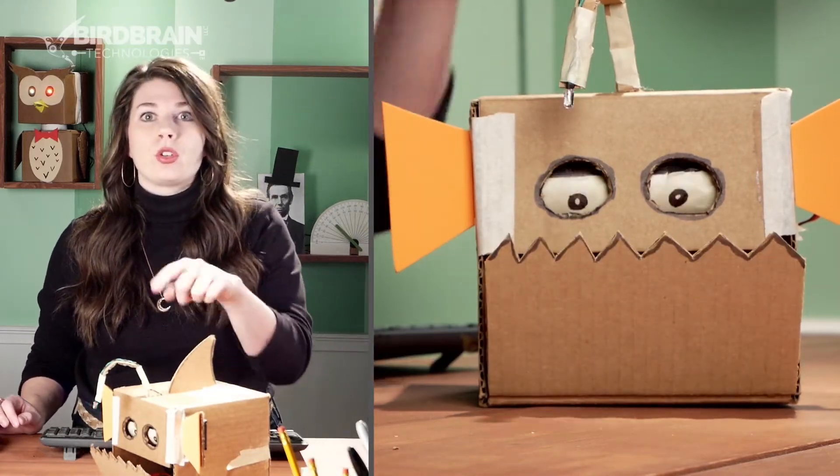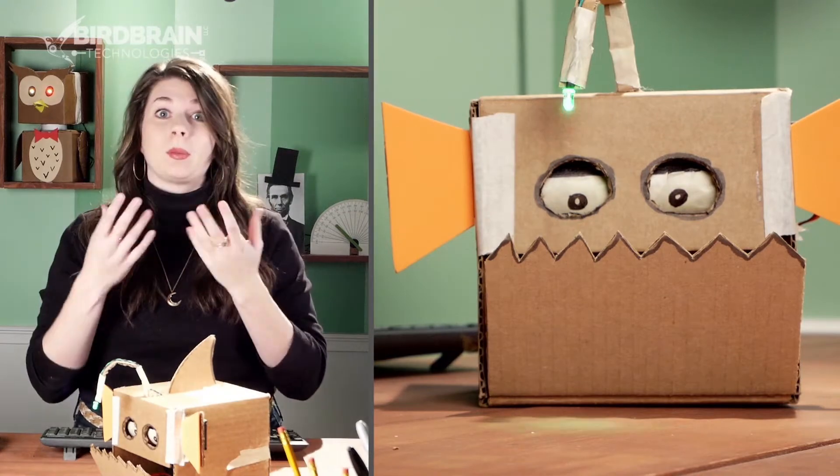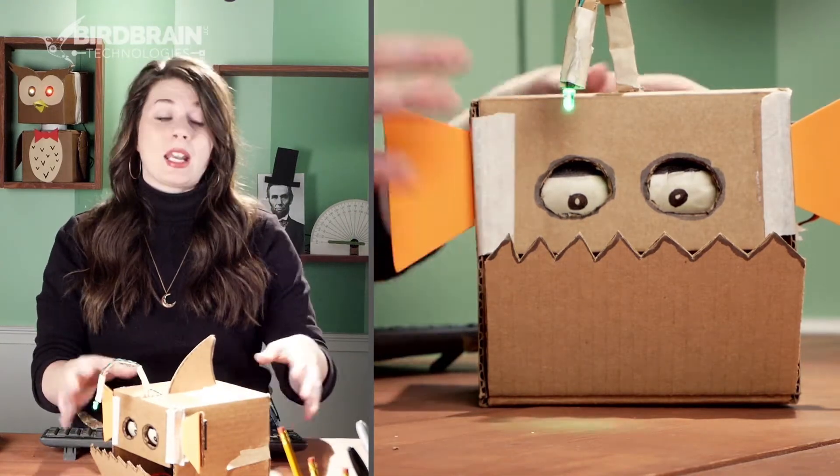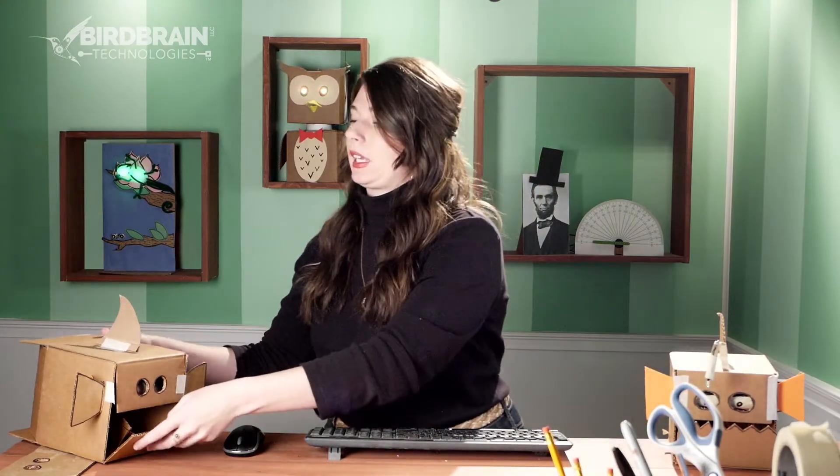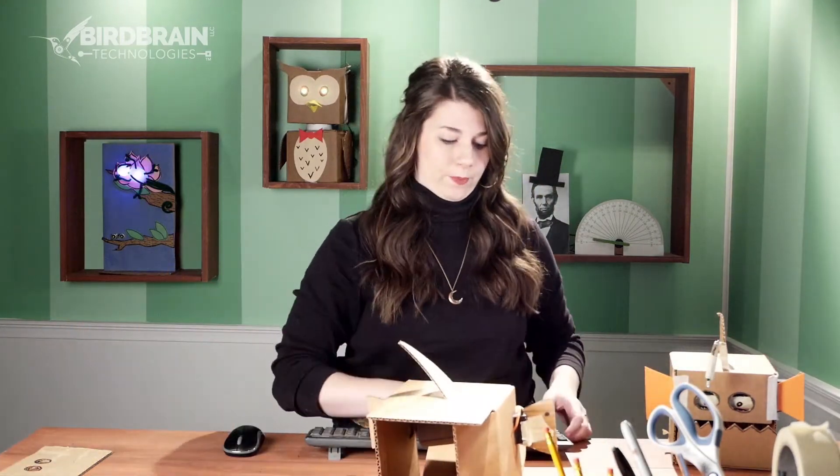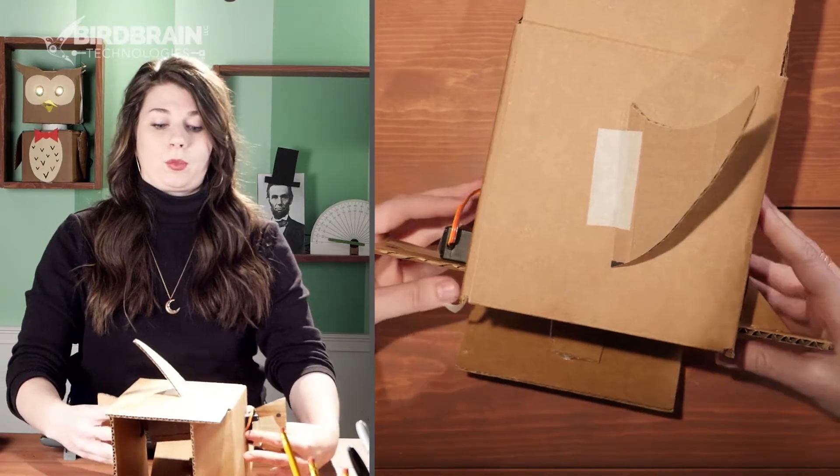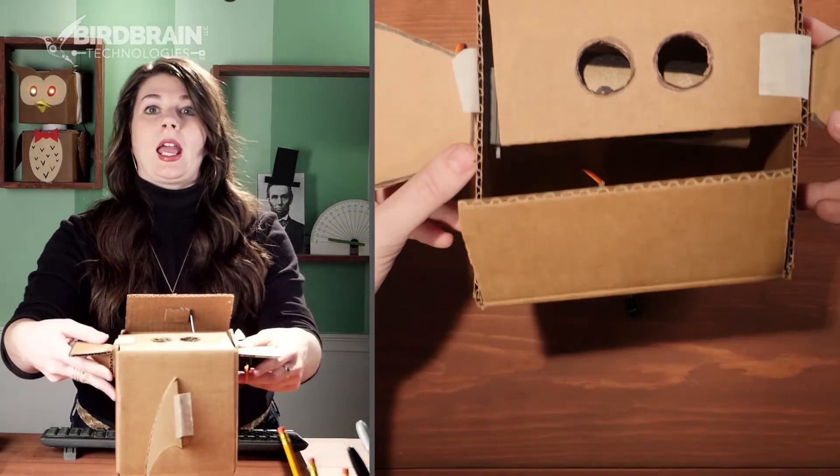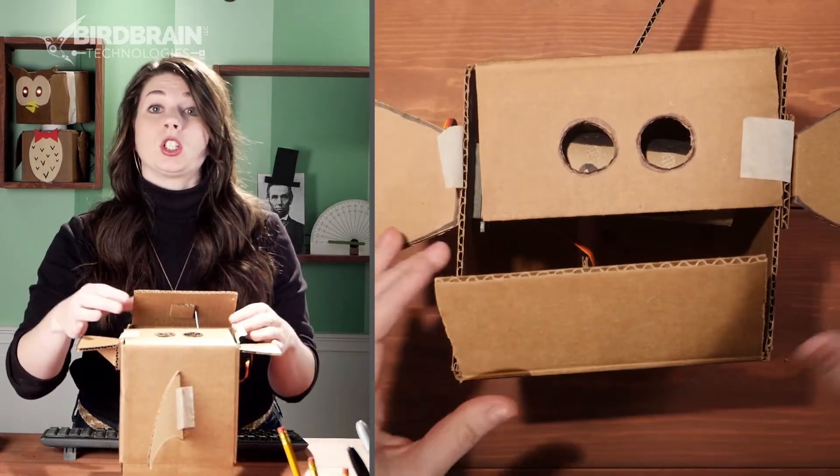So to explore how those two mechanisms work, the eye mechanism and the mouth mechanism, I've made another angler fish that we can take apart to look inside. All right. So in this angler fish project, let's first take a look at the mouth mechanism, which is called a crank.